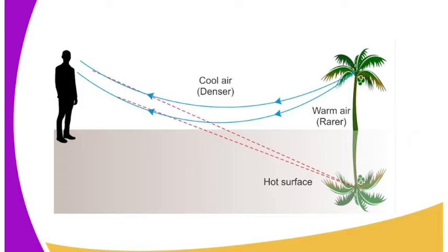As you can see, that is a mirage. And how is a mirage formed? On a hot day, the ground gets heated up and in turn heats up the air above it. The heated air expands and becomes less dense.